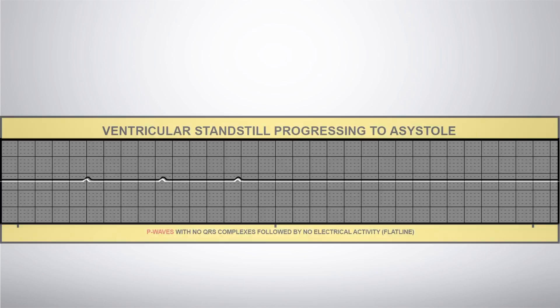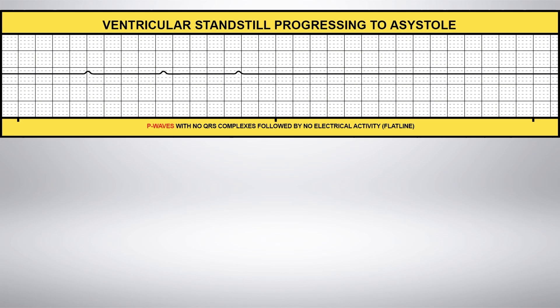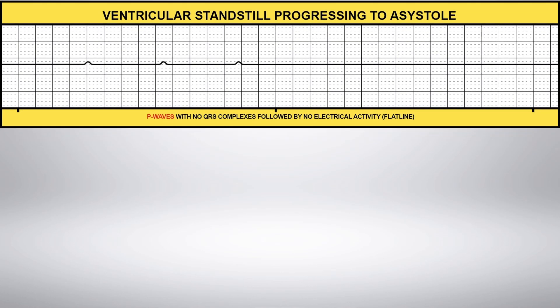What is your interpretation of this EKG rhythm strip? Ventricular standstill, progressing to asystole.